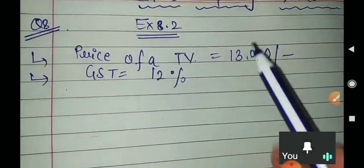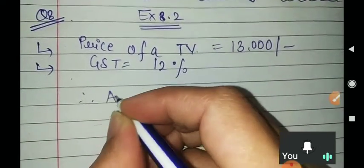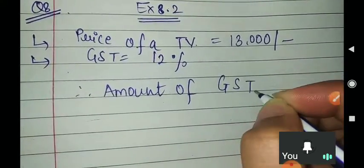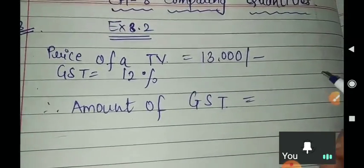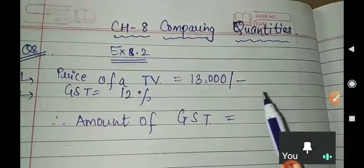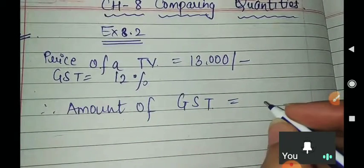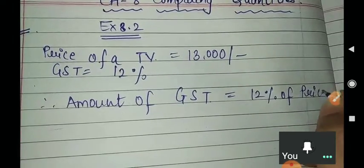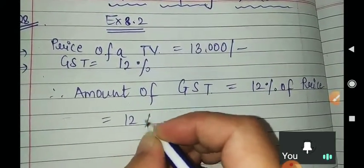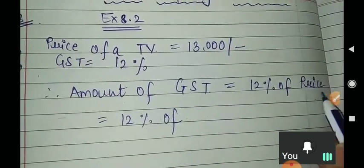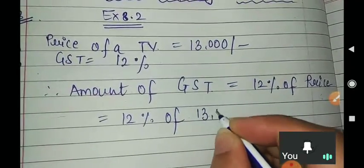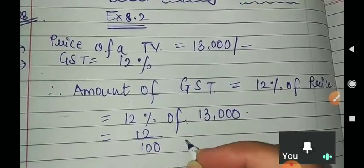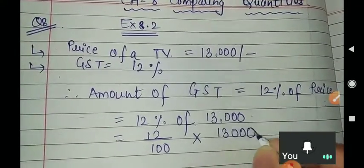That is Goods and Services Tax. So you have to find out the amount of GST. The amount of GST is always calculated on the price. Price of a TV is ₹13,000. 12% means upon 100. Off means multiplication. 13,000.